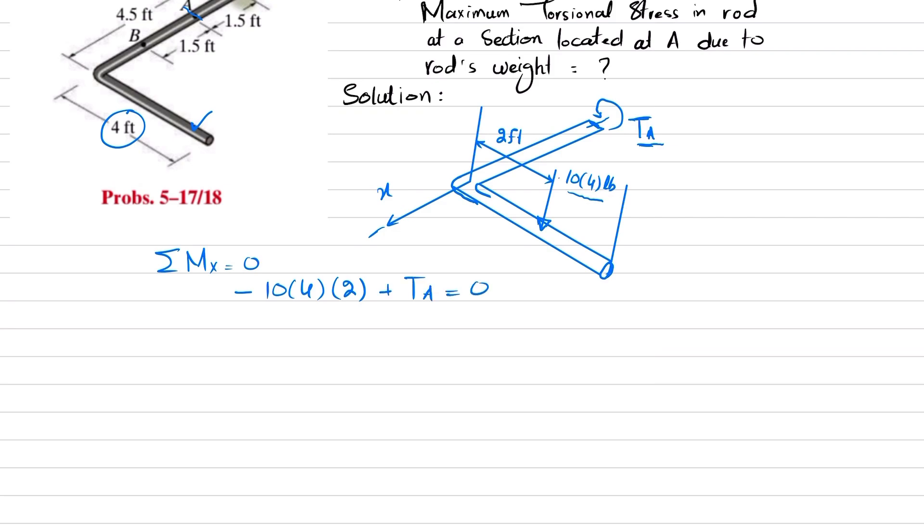From here you will get torque at point A is equal to 80 pound-feet. So if you convert it into inches, 80 multiplied by 12 inches. So this torque A will be equal to 960 pound-inches.